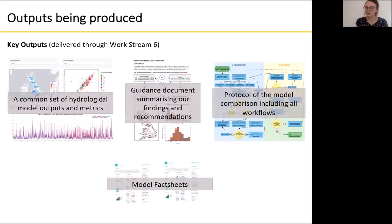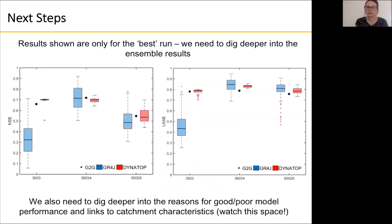We still have a lot of work to do. Over the next six months we're going to be delving deeper into the ensemble results — the results shown today are just for the best run, but GR4J and dynamic top model actually have ensembles of model simulations. In the box plots below you can see three different catchments, with box plots showing the range of model results from the ensemble: blue is GR4J, red is dynamic top model, and the dot is Grid-to-Grid with its single model simulation.